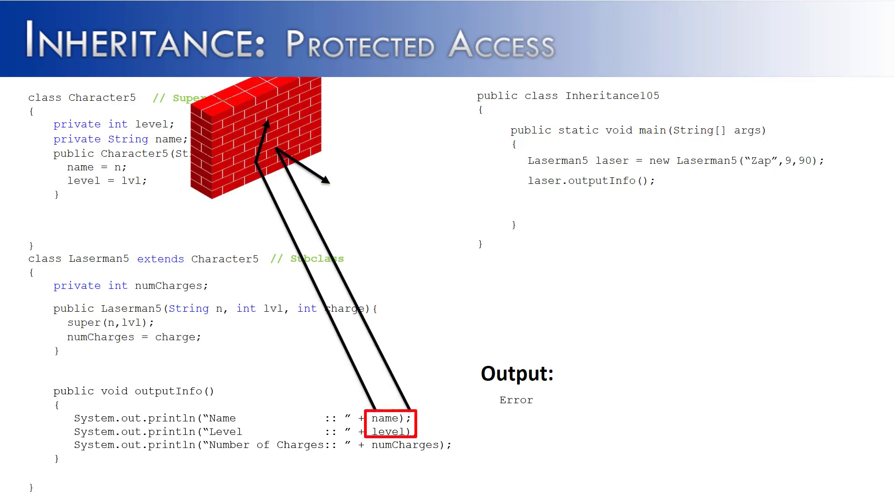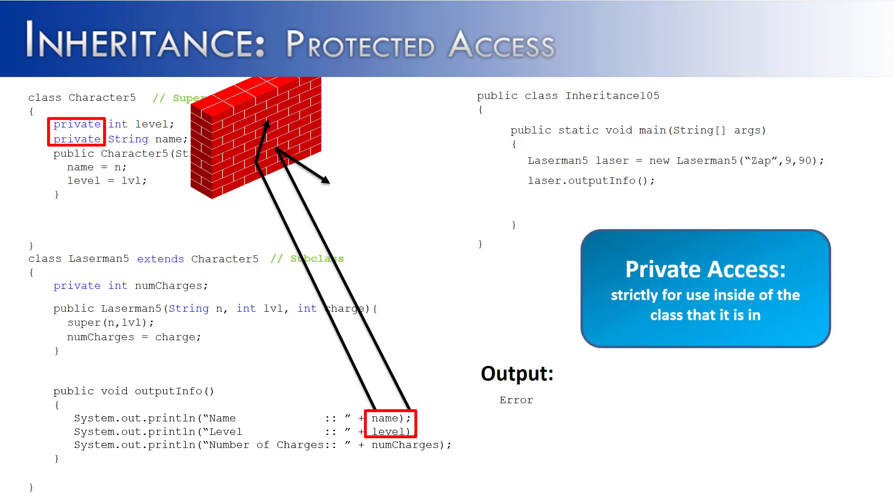When the method outputInfo is invoked and it tries to reach up into the Character class to pull down the name and level, it hits a roadblock. Why does it hit a roadblock? Because name and level are both declared as private. Private access means it's strictly for use inside the class that it's in. Only members of the Character5 class can access level and name. Any other attempt to access level and name is going to be rebuffed and result in an error as we have on the screen.